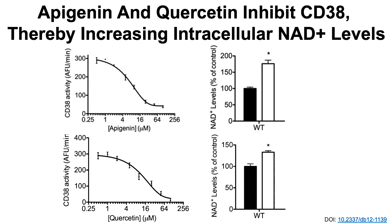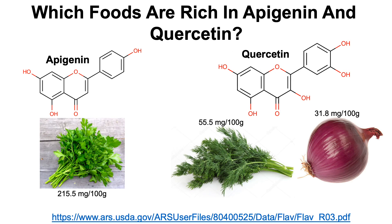So which foods have apigenin and quercetin, with the goal of maximizing intracellular NAD levels? The most concentrated source of apigenin is found in parsley, at 215.5 milligrams per 100 grams. In terms of quercetin, the two best sources are dill, at 55.5 milligrams per 100 grams, and red or purple onions.